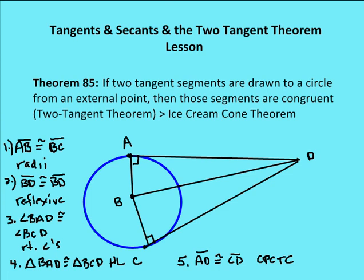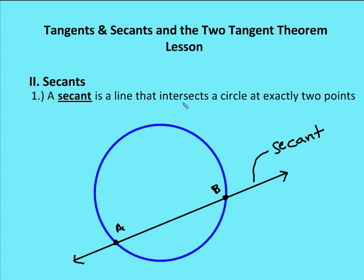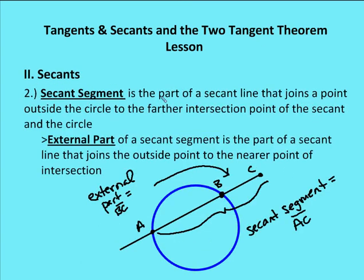A secant is a line that intersects a circle at exactly two points, forming a chord. A secant is different from a tangent in that it intersects the circle at two points rather than one. A secant segment is the part of the secant line that joins a point outside the circle to the farther intersection point — for example, segment A to C. The external part of a secant segment, B to C, is the portion joining the outside point to the nearer intersection point.